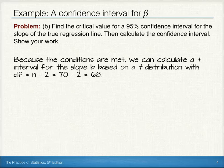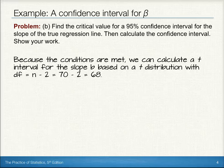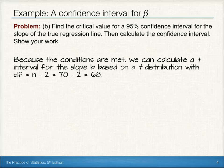Well, because the conditions were met, we checked that in an earlier example, we can calculate a t-interval for the slope b based on a t-distribution with 68 degrees of freedom. We had 70 helicopters drop. To calculate the degrees of freedom, we subtract 2 from our sample size.